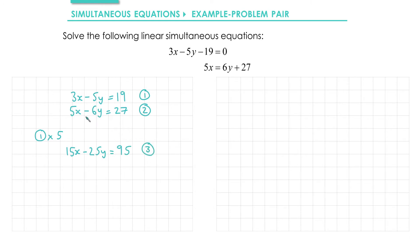With equation 2, to get 15x I need to multiply by 3. That will give me 15x minus 18y equals 81, and I'll call that equation 4.